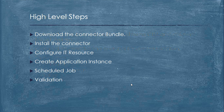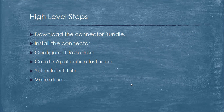First, we need to download the connector bundle. Since we are using a predefined connector, you can find and download the bundle from the Oracle website. Once you download the bundle, you install the connector. Once the connector installation is done, OIM has a translator to help it communicate and instruct the target system on what operations to perform. Then we need to configure the IT resource in order to reach the target system.